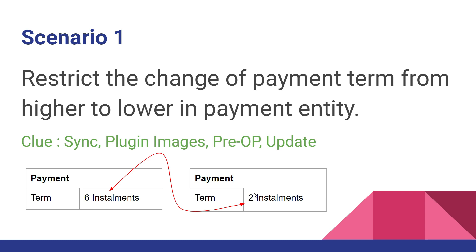You have to register a plugin in pre-operation — before it is updated to two installments from six installments. Use the update message on the update of the term field to trigger a plugin executed synchronously. Use the plugin image in your plugin code to fetch the pre-image value of term and post-image value of term, then check if the pre-image term value is more than the post-image term value, then throw an InvalidPluginExecutionException.